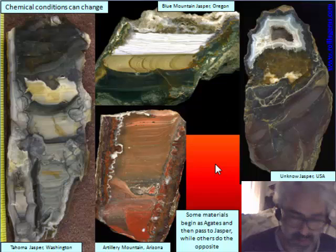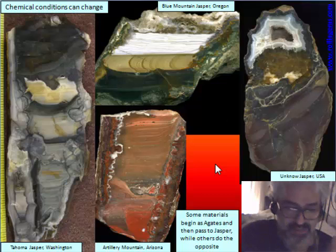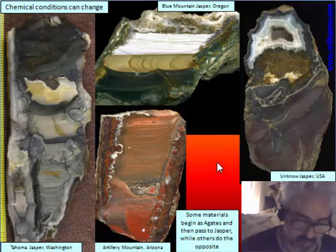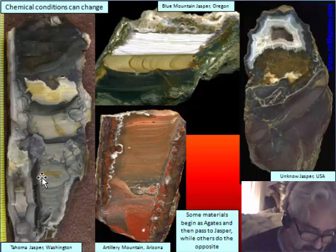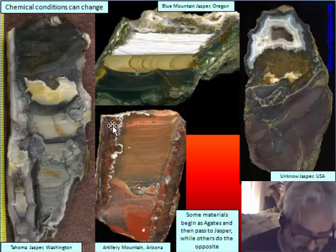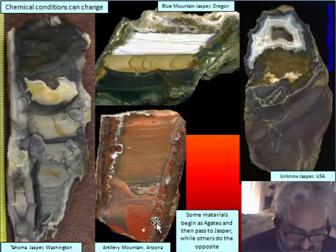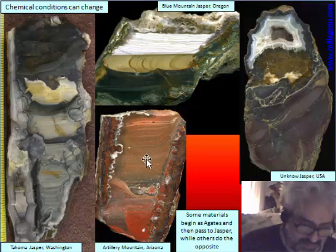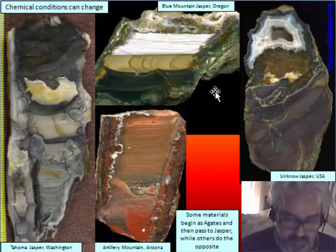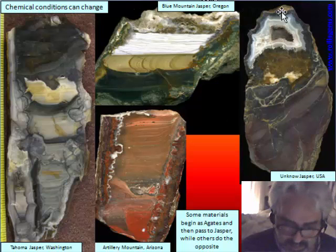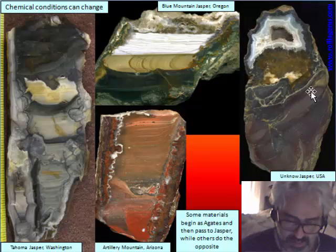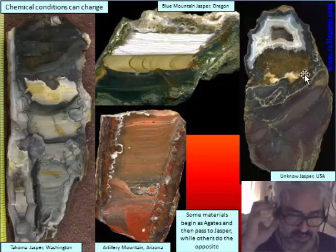We don't know exactly in many materials whether the conditions changed abruptly, or whether there is a transition, or a gap of time between the two processes. In some cases there is plume agate or chalcedony on the border and jasper inside. Some jasper nodules can be half-filled by jasper and then show the formation of an agate on top, or a blue mantle. There is a changing of chemical conditions, but we don't know the time elapsed.